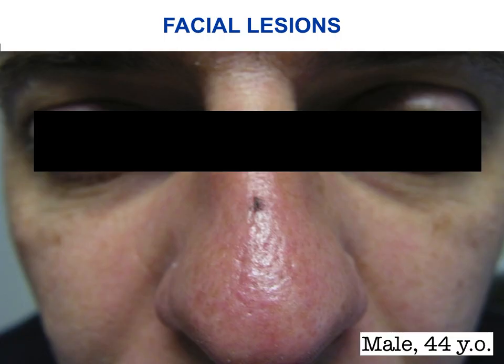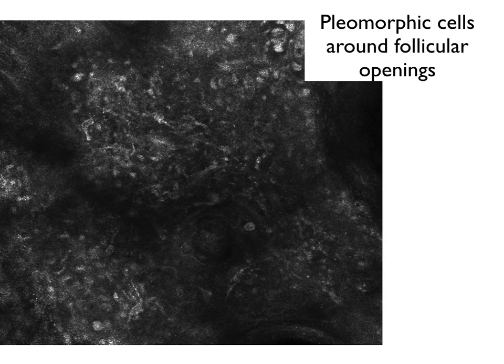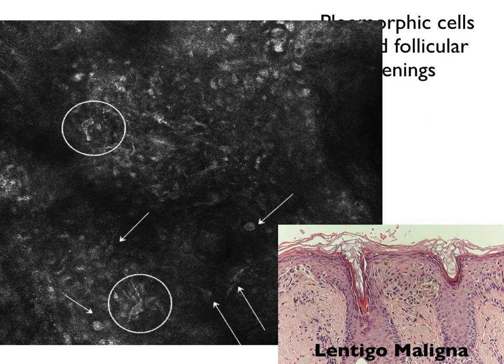Another important application is for lesions located on the face, given their cosmetic relevance. In this case, a very small pigmented spot on the nose showed no clear diagnosis upon dermoscopy. Confocal microscopy was able to show atypical cells — some dendritic, others roundish — in a pattern suggestive of lentigo maligna, as confirmed by histopathology.